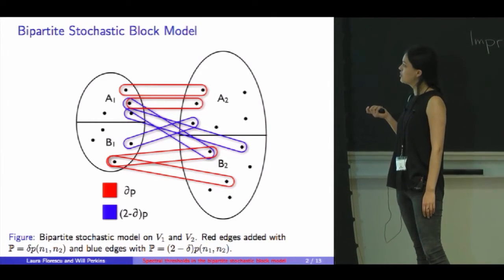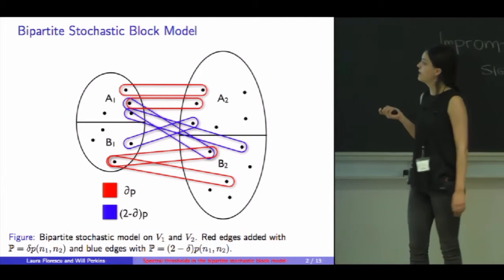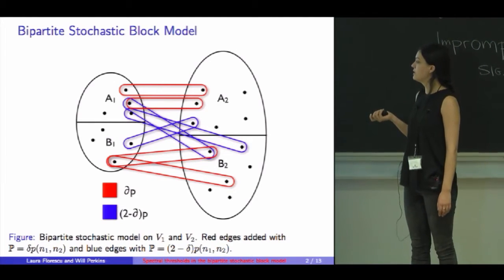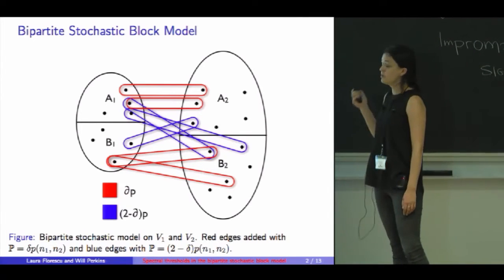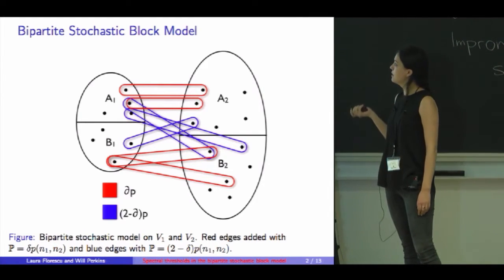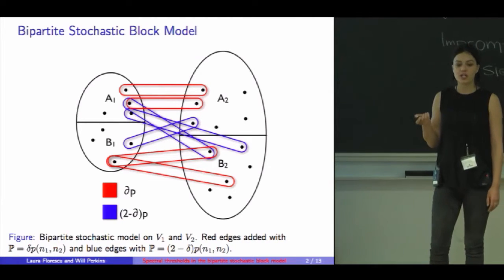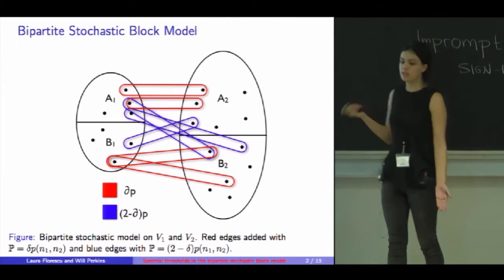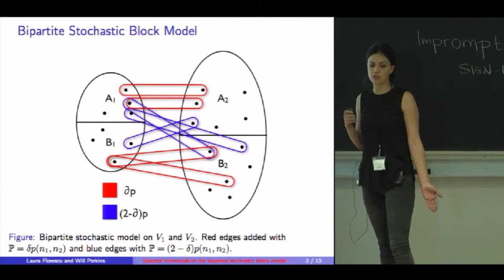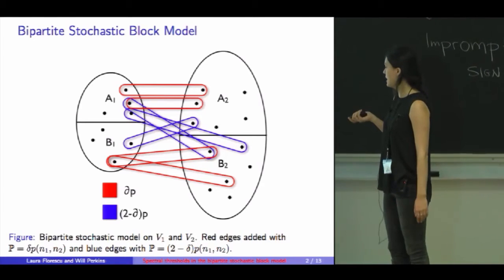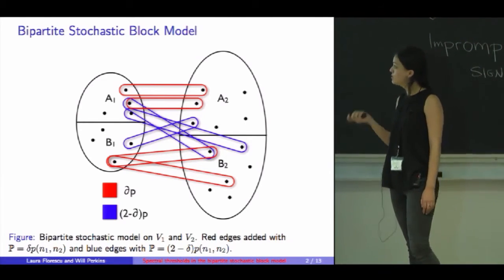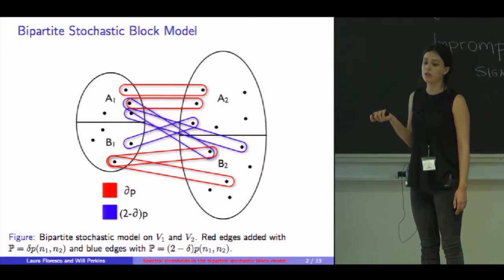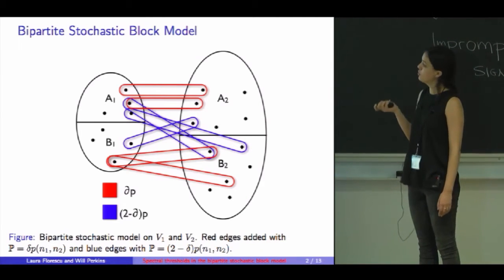The edges of the different types, plus-minus or minus-plus, I'm going to add with probability (2 - delta) times P. For the purpose of this talk, imagine that the right-hand side is much larger than the left-hand side, and this is due to a reduction that I'm going to describe on the next slide. The goal is to recover the labels of the left-hand side vertices, A1 and B1.